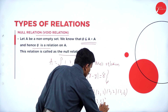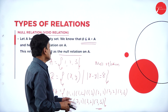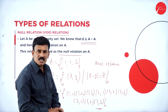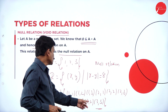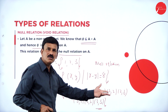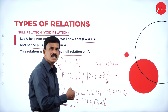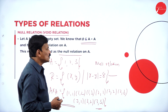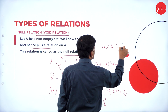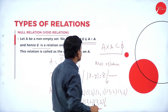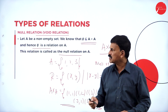The ordered pairs from A to A are: (1,1), (1,2), (1,3), (2,1), (2,2), (2,3), (3,1), (3,2), (3,3). None of these elements satisfy |x − y| = 8, since for example 3 minus 1 is 2, 3 minus 2 is 1, 3 minus 3 is 0. Therefore this is an example for a null relation, which is a subset of A cross A.